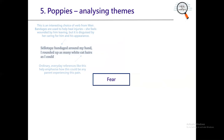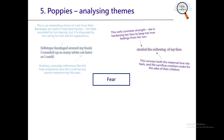She also mentions cat hairs, along with lots of other ordinary, everyday references. What that does is help us understand that this could be anyone — any mother, any parent. Jane Weir wanted to explore what it must be like for mothers of soldiers, but we can open that up to all parents ever who have lost their children to war. The verb 'steeled' connotes strength — we associate it with metal. She is hardening her face to keep her true feelings from her son, conveying both the maternal love she feels and the sacrifices that mothers make for the sake of their children.